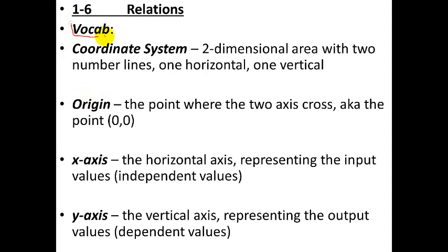Okay, so vocab. The first one is a coordinate system. So a coordinate system is a two-dimensional area with number lines, one vertical, one horizontal. They're typically called the x and y-axis, which are your next vocabulary words. So it looks like this. You might have seen it before.